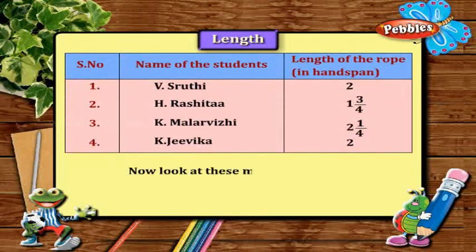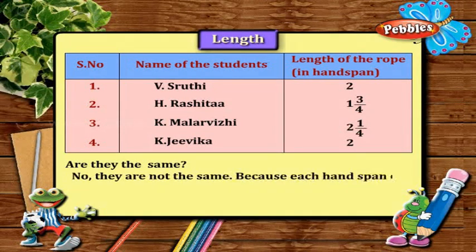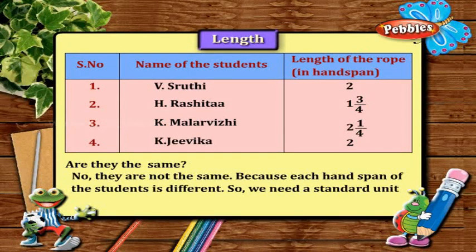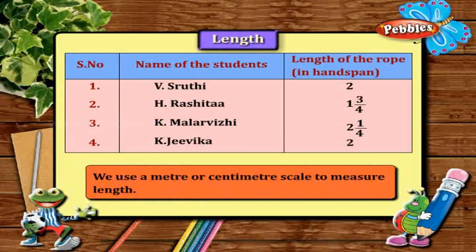Now, look at these measurements. Are they the same? No, they are not the same. Why? Because each hand span of the student is different. So, we need a standard unit to measure the length. We use a meter or centimeter scale to measure length.